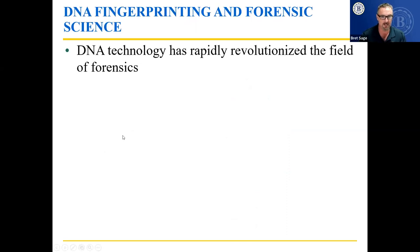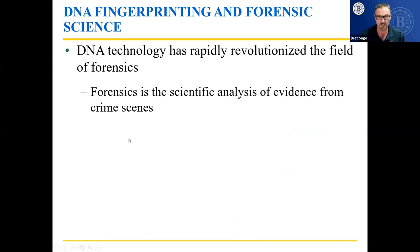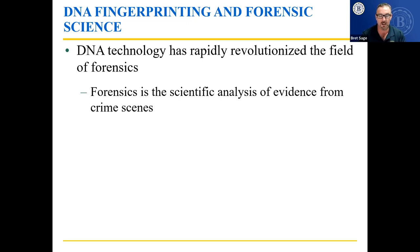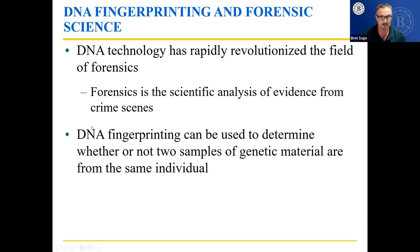DNA fingerprinting and forensic science. DNA technology has rapidly revolutionized the field of forensics — the scientific analysis of evidence from crime scenes. DNA fingerprinting can be used to determine whether two samples of genetic material are from the same individual. For example, you find blood somewhere, check the genetic signature, gain DNA from a potential suspect, and compare them to see if they match.